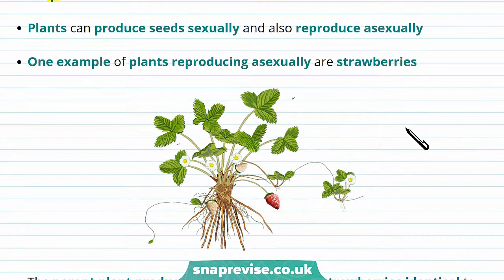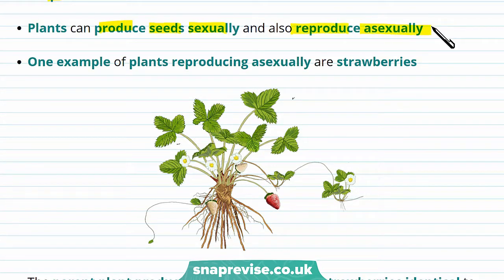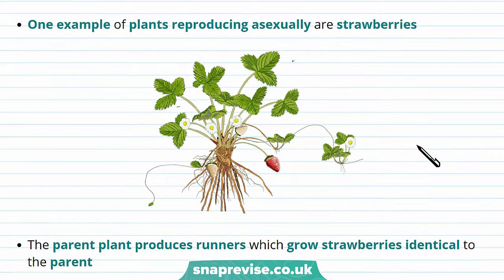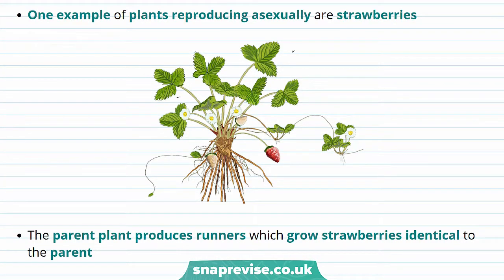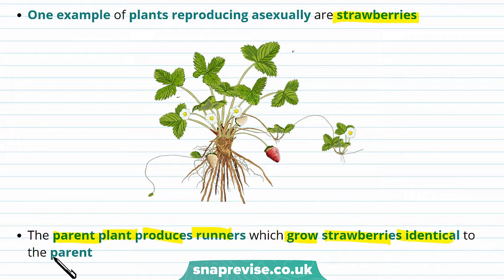Plants can produce seeds sexually and also reproduce asexually. One plant that does this is the strawberry. The parent plant produces runners, and these runners grow strawberries identical to the parent. As you can see, the runner here is growing a new strawberry.